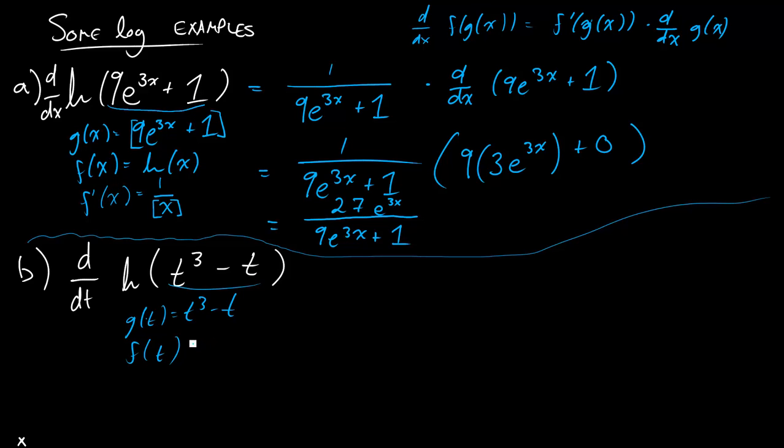f of t is just going to be the ln of t. Remembering if I replaced this g here, if I replace this t with g of t, this whole thing would be f of g of t, right?